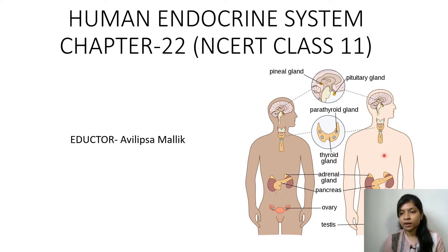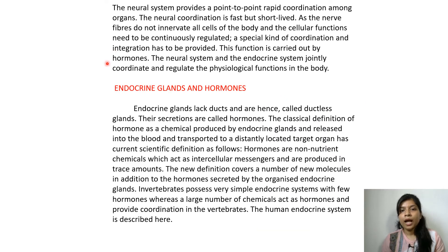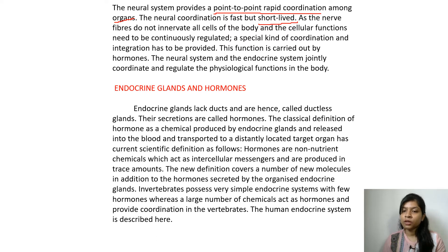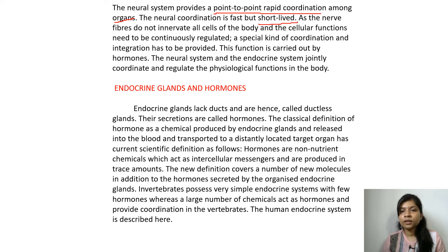Let's get into the topic to understand exactly what endocrine glands are, how they function, and why they are necessary. We are provided with a neural system — a well-maintained neural system — which provides point-to-point rapid coordination among organs. However, these neural functions are very short-lived, so we need something additional for our system, and that additional system is known as the endocrine system.